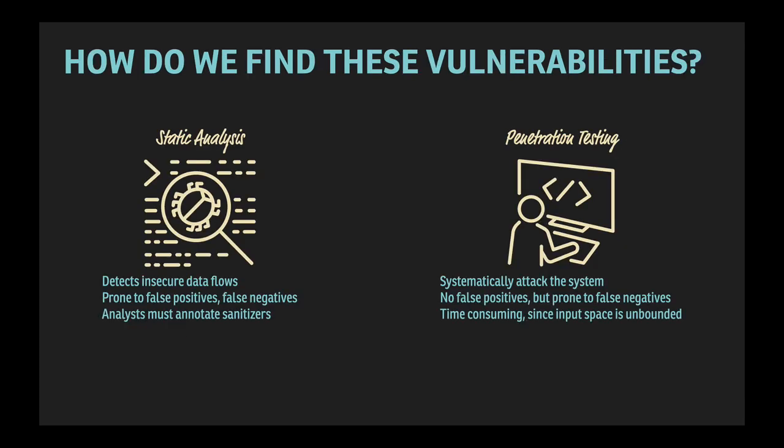So what can developers do to check to see if these validators and sanitizers exist and are properly placed? Well, static analyzers for code injection detection look for insecure data flows, but can be tedious, prone to false positives and also to false negatives. There are also usually manual steps. For instance, analysts need to identify which methods correctly sanitize input values to whitelist them.